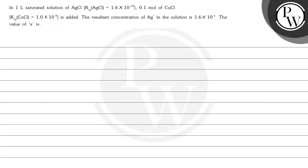Hello, let's see the question here. In one liter saturated solution of AgCl, Ksp for AgCl is 1.6 × 10^-10. 0.1 mol of CuCl, Ksp for CuCl is 1 × 10^-6, is added. The resultant concentration of Ag+ in the solution is 1.6 × 10^-x. The value of x is...